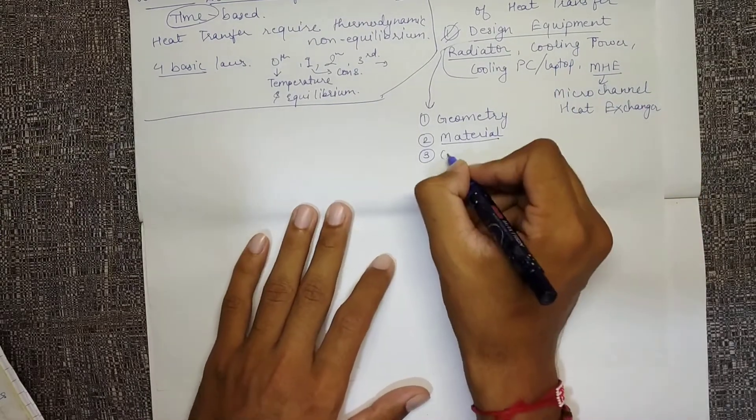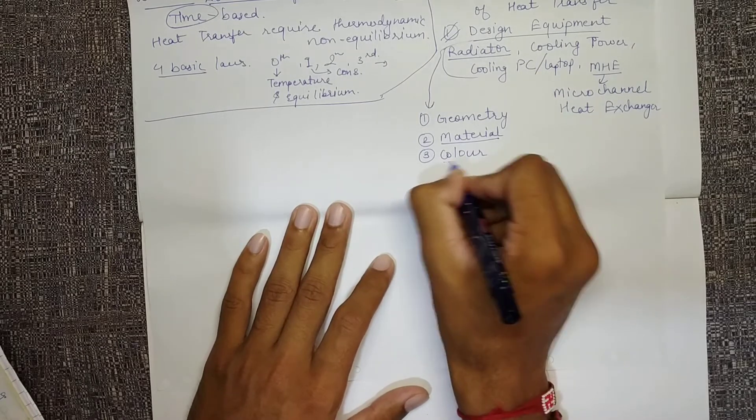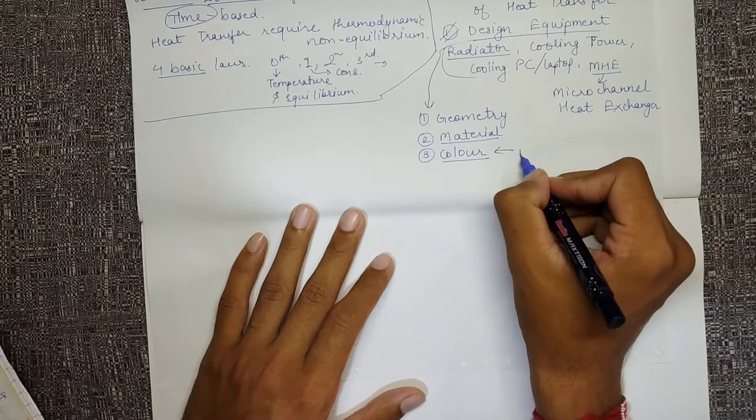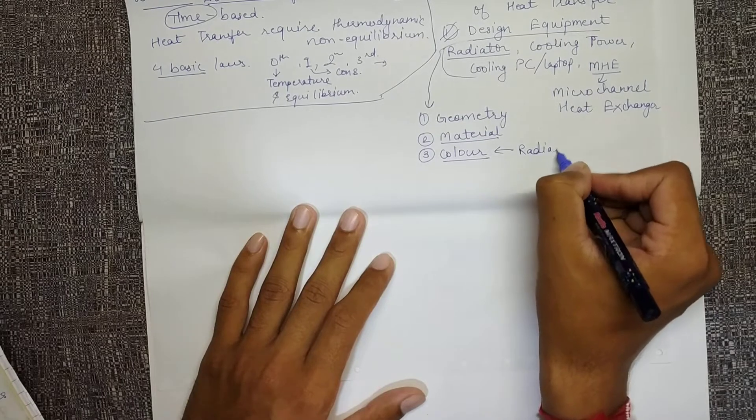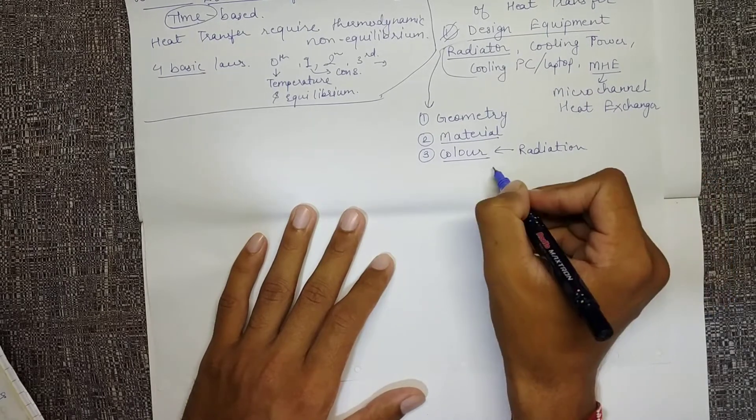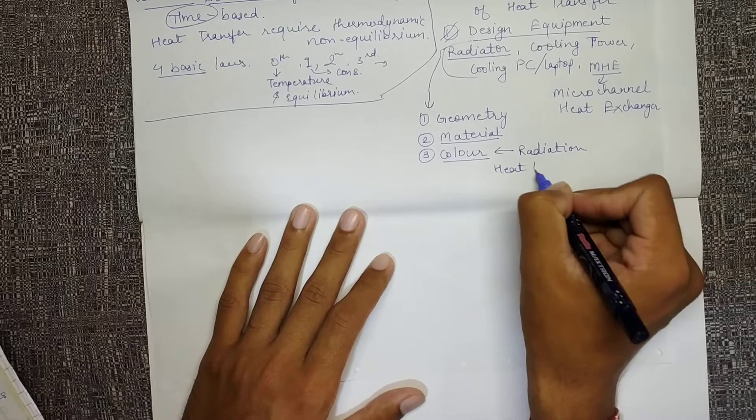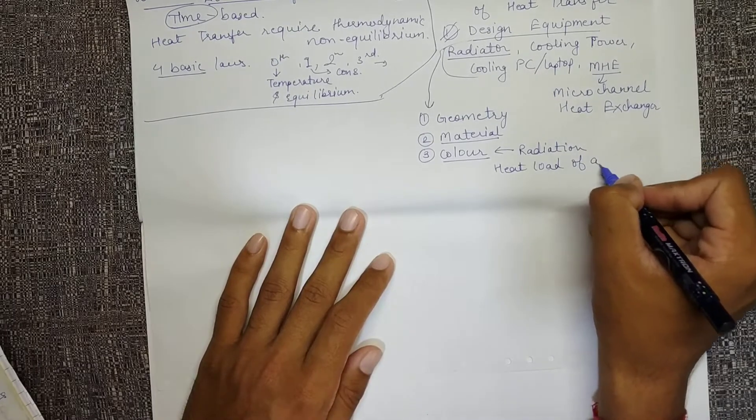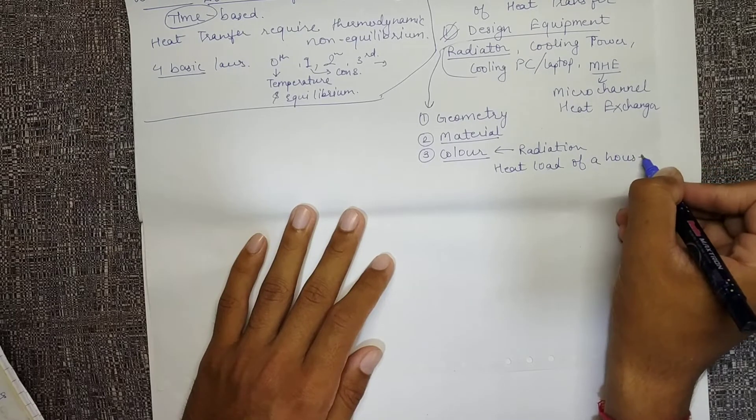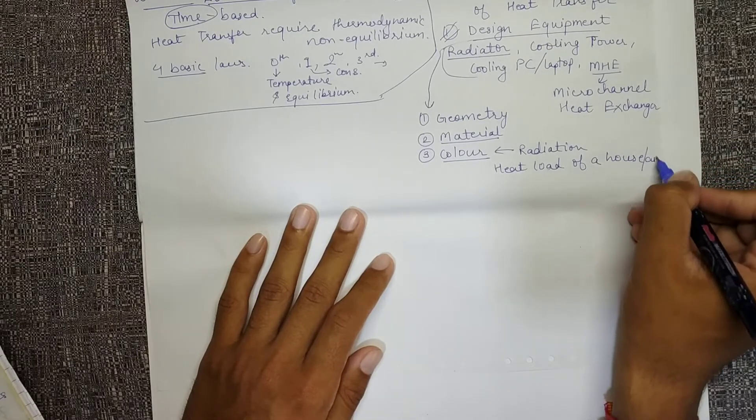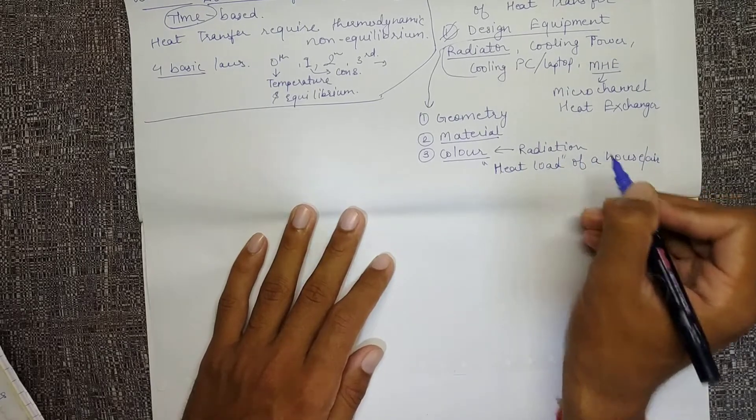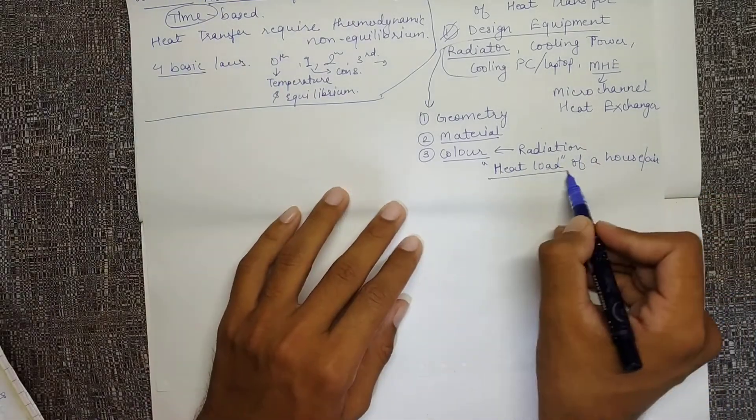The third is color - this is very important and we'll go into more details of this when we are in the chapter of radiation or when we are studying the heat load of a house. At that time, or for a car, anything like that - whenever heat loads are included, whenever we want to calculate heat load.